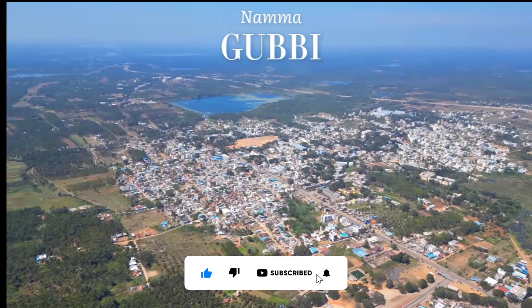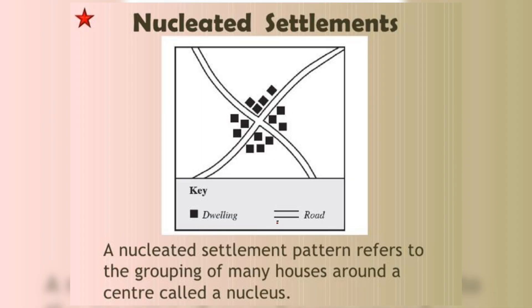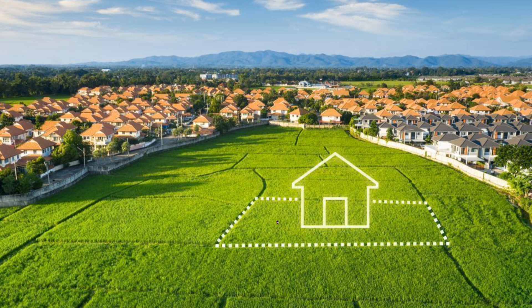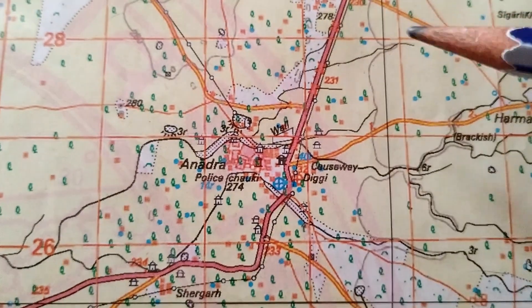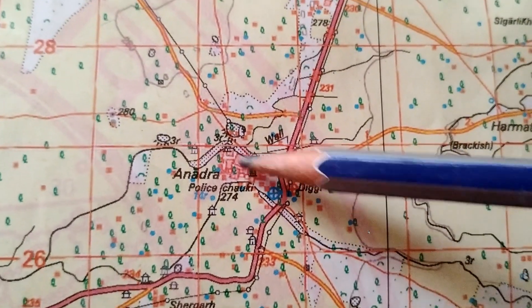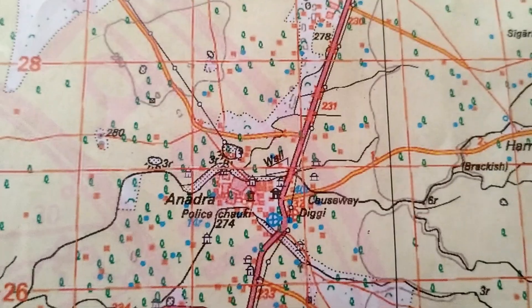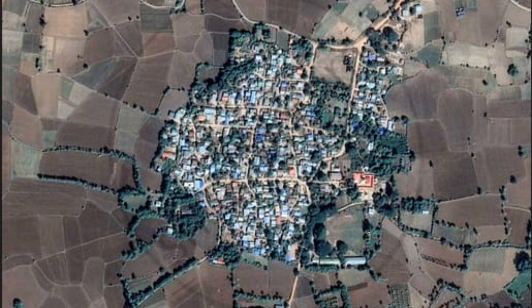In nucleated settlements, houses and buildings are grouped closely together, often forming a village or town centre. These are common in fertile areas where resources like water, transportation and fertile land are available. On the topographical map, you can see all the houses or buildings are grouped closely together — this is the best example for nucleated settlement.